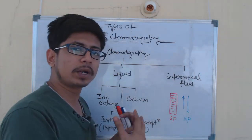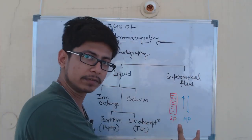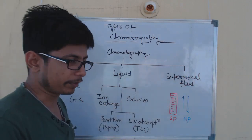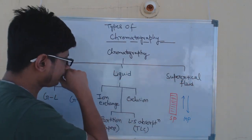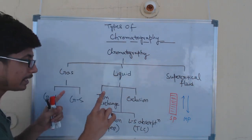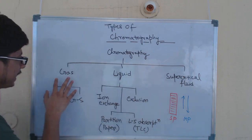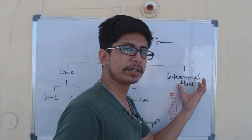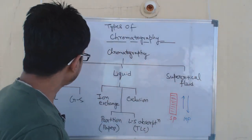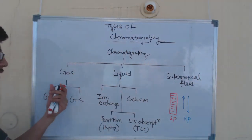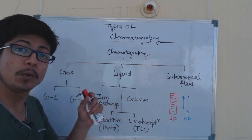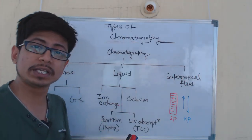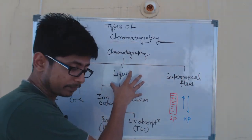The combination of phases ultimately gives us the name of the different types of chromatography techniques. For example, we can divide chromatography into three major types based on phase: gas chromatography, liquid chromatography, and supercritical fluid chromatography. Gas chromatography means the molecules we want to separate will be in gaseous form, while liquid chromatography means the molecules will be in liquid form.